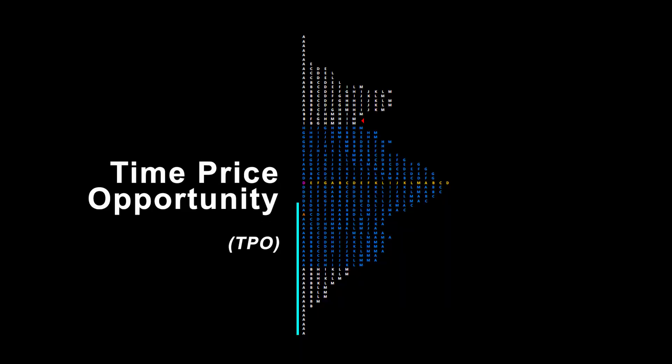When you look at your market profiles you're going to see a lot of letters. Each of these letters is called a TPO and it represents a price that the market traded in a period of time. That period of time is usually set at 30 minutes and that's a standard way that a market profile is set up for day trading.